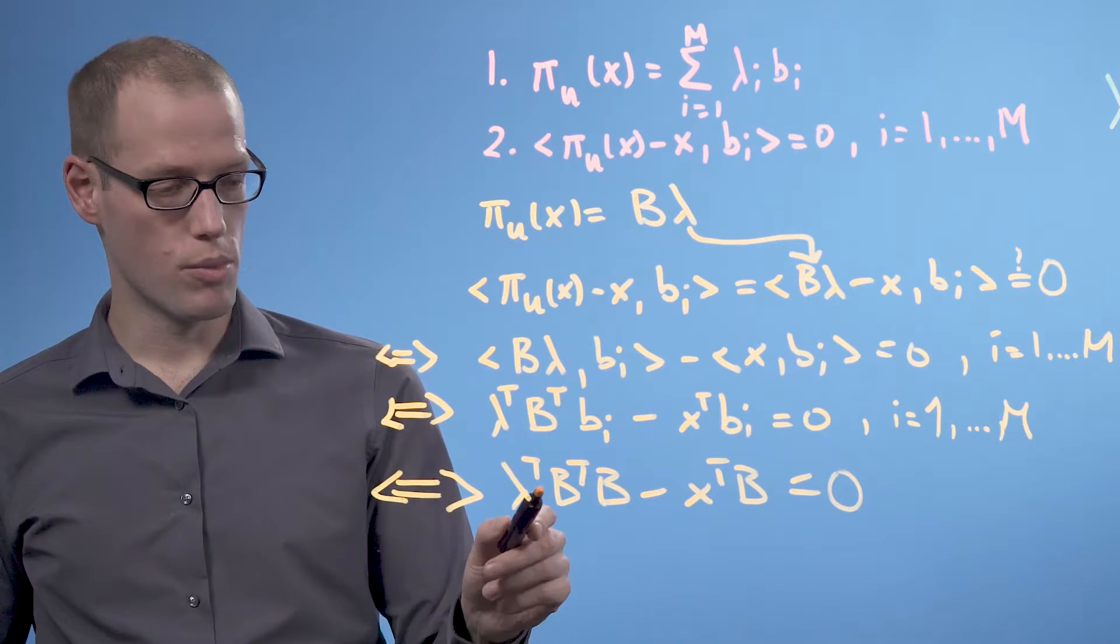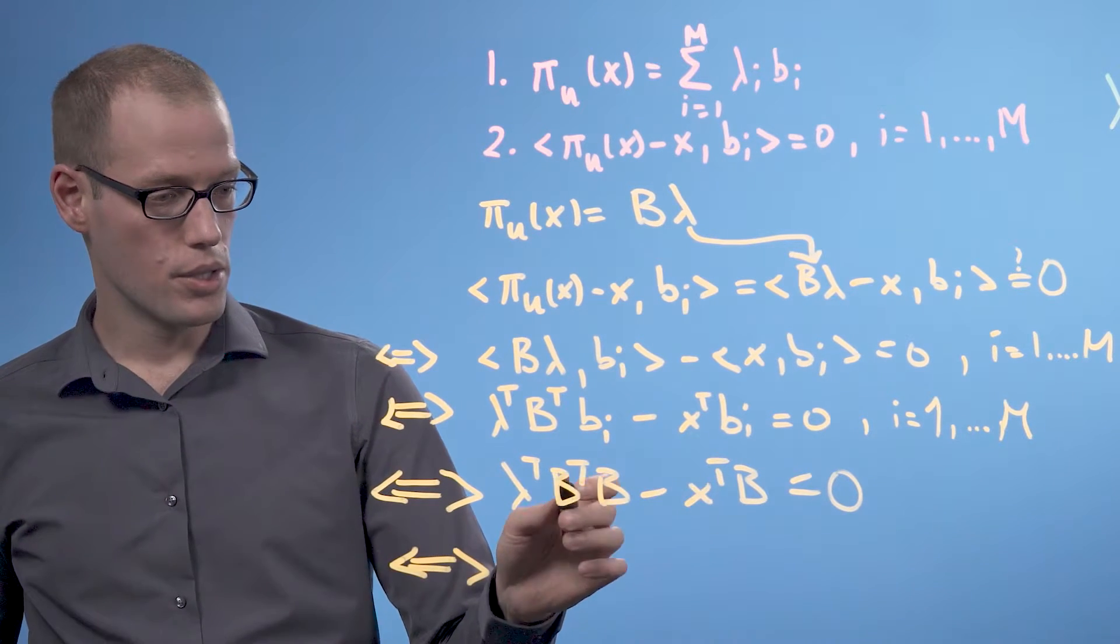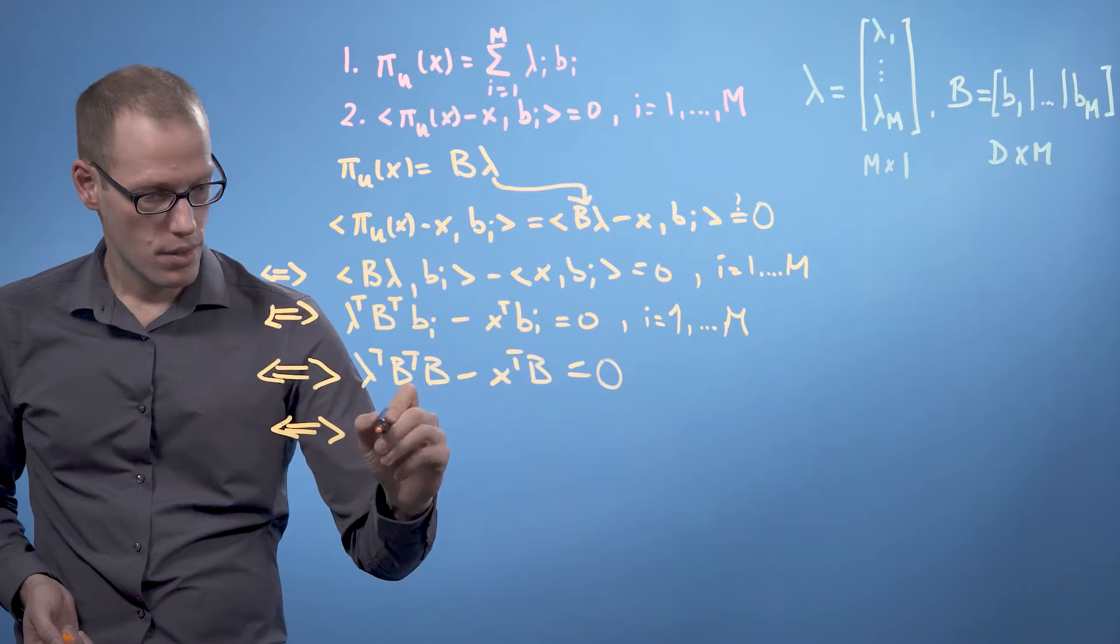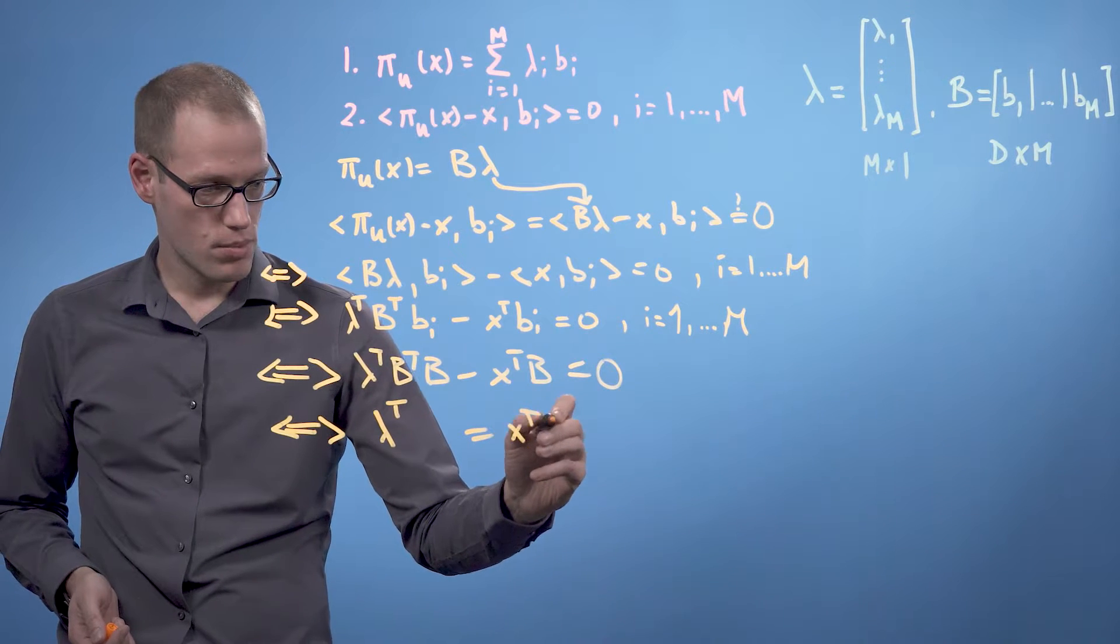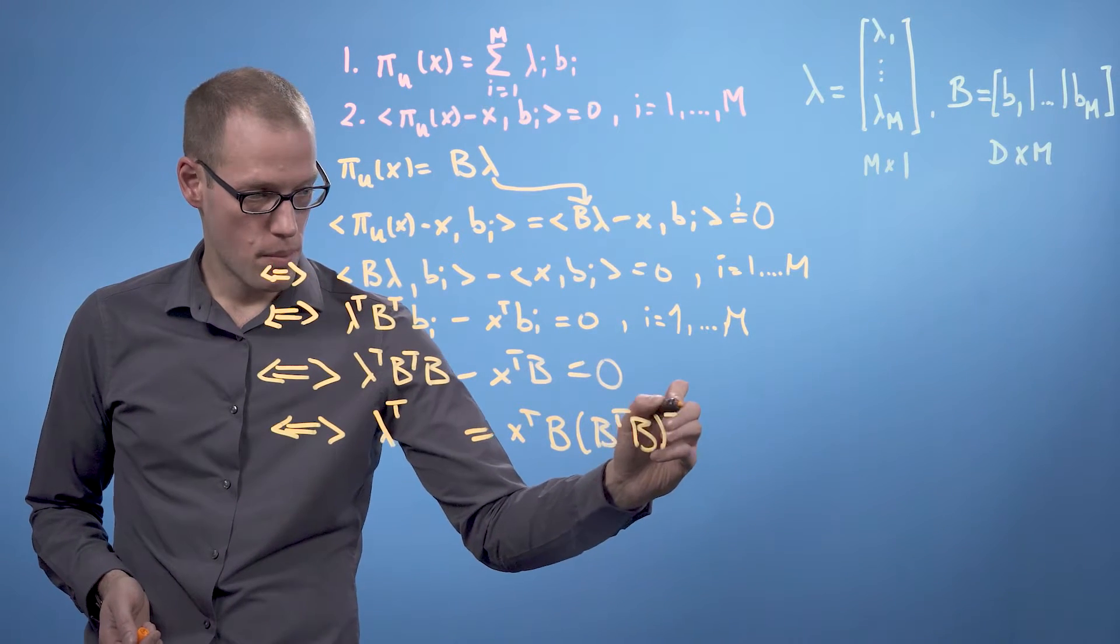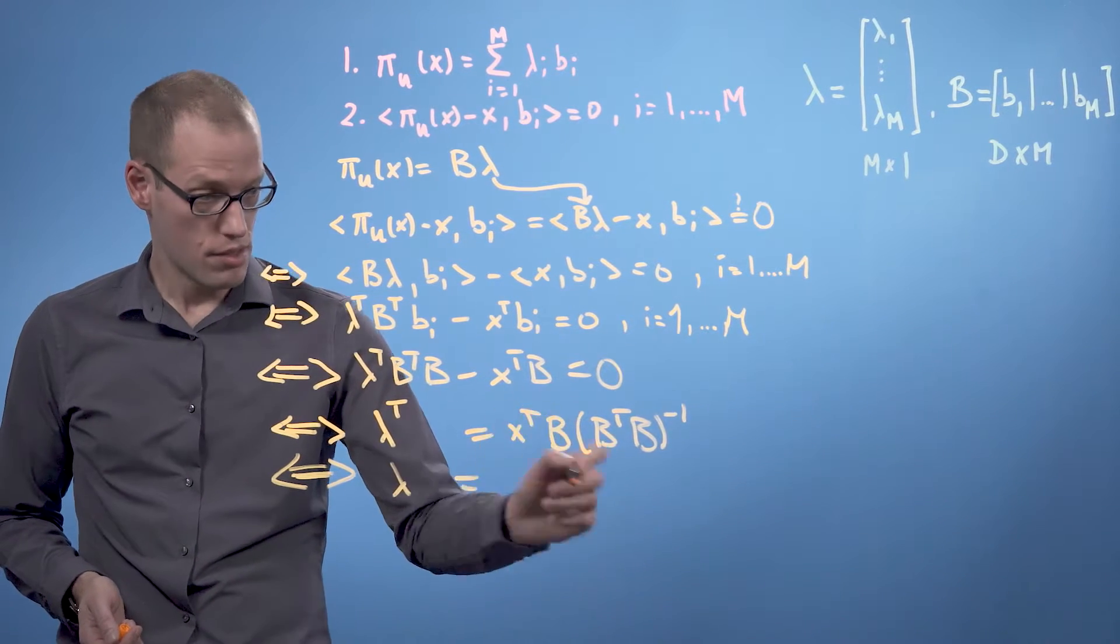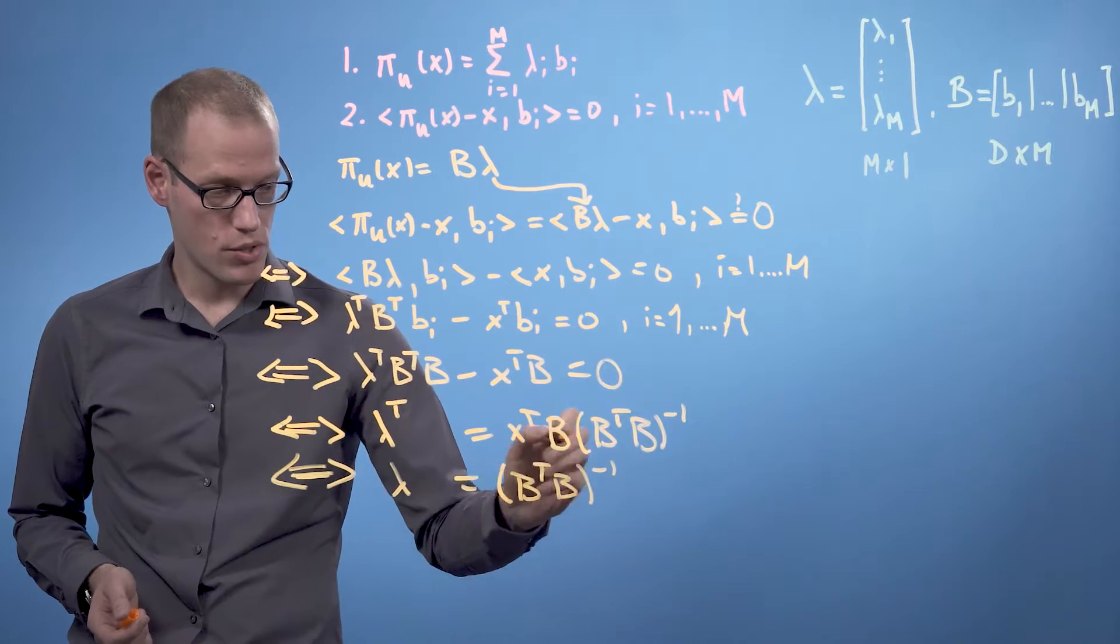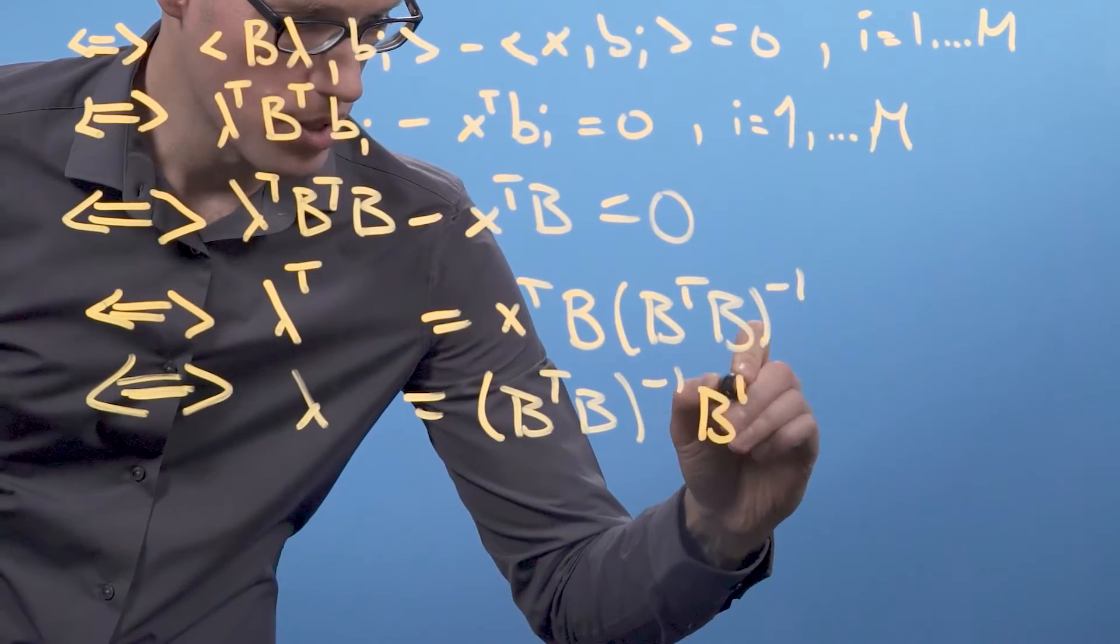What we would like to do now is we would like to identify λ. For this, we are going to right multiply the inverse of B^T times B onto the entire equation. And then we get λ^T equals x^T times B times (B^T B)^{-1}, which then also means we can write λ as the transpose of this entire expression. We get (B^T B)^{-1} times B^T x.